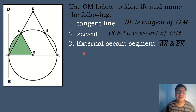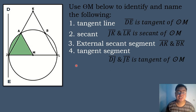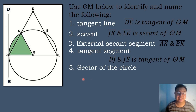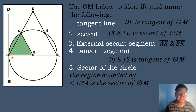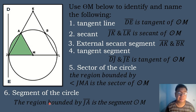Next, the external secant segment — these are parts of the secant segment located outside the circle. If the secant segment is segment JK, then the external secant segment is segment AK. If the secant segment is segment LK, then the external secant segment is segment BK. Next, the tangent segments are segment DJ and segment JE, so we have two tangent segments. The sector of circle M is the region bounded by angle JME. And the segment of the circle is the region bounded by segment JE.